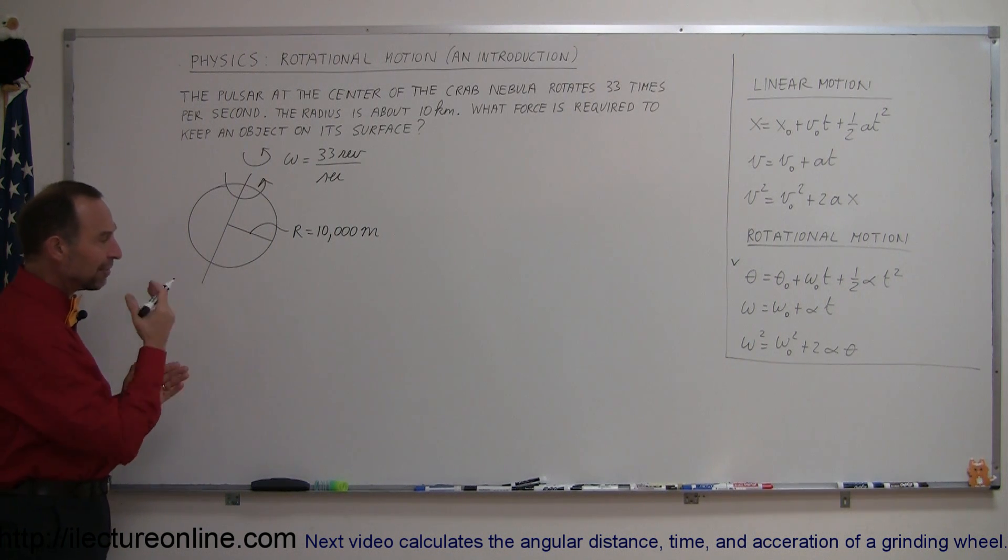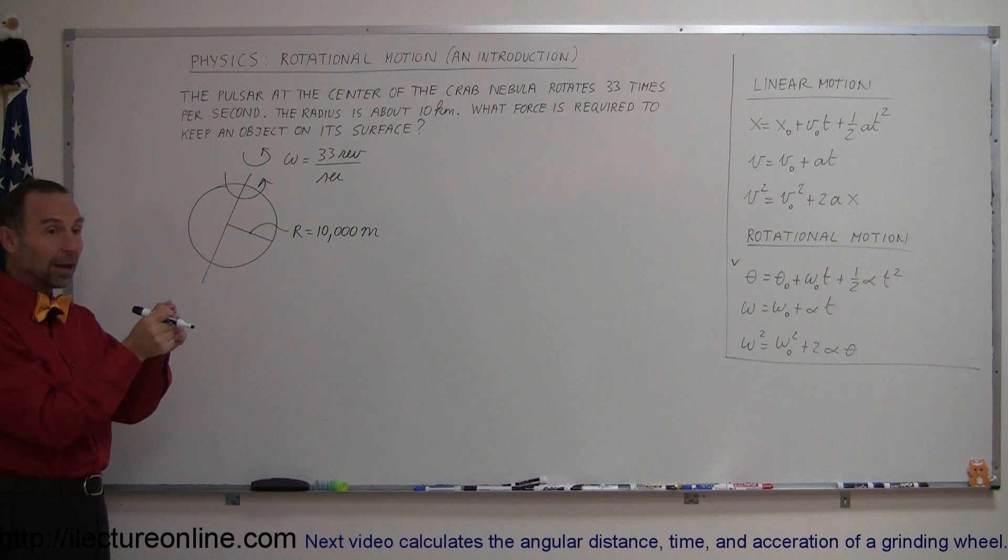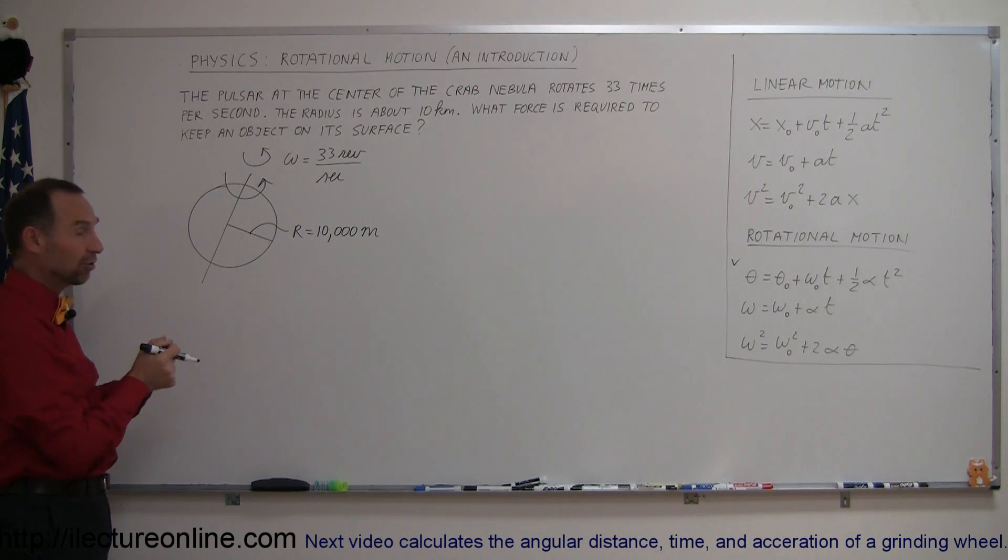Imagine something that's spinning really fast, so in order to keep an object on its surface, you have to have centripetal forces, and the centripetal force in this case is going to be provided by the enormous gravity on that pulsar.